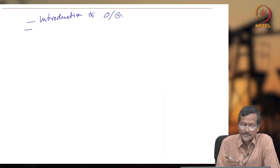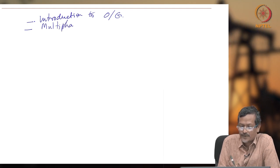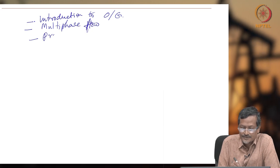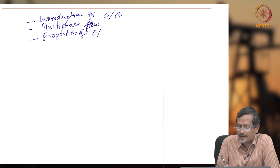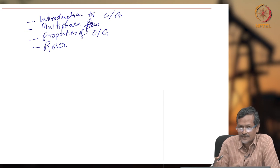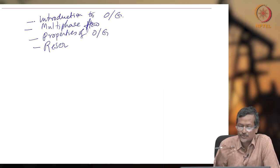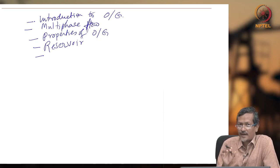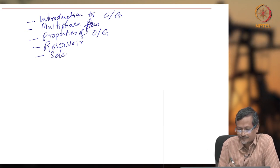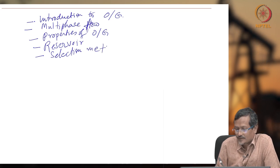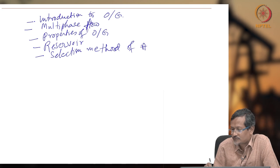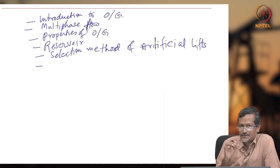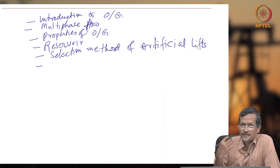Next, I will be considering topics such as multiphase flow, then properties of oil and gas, then reservoir properties — because without knowing reservoir properties you cannot use any artificial lift, so you should know the properties of fluid and reservoir. After that, I will introduce artificial lift and where to use what type, covering the selection method of artificial lift.